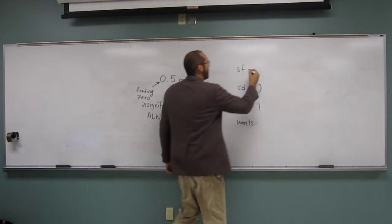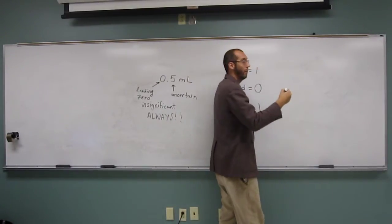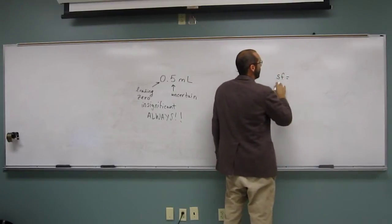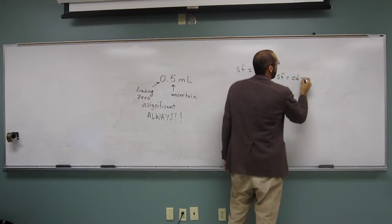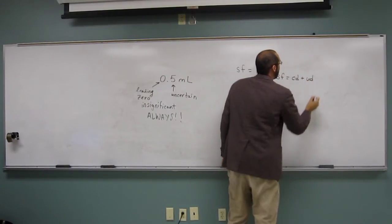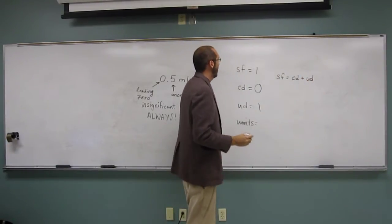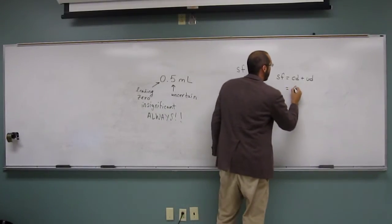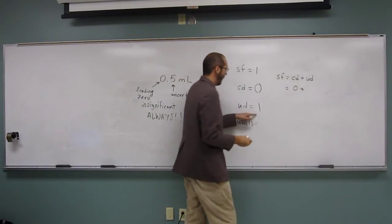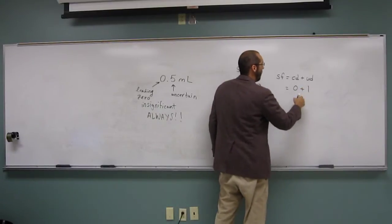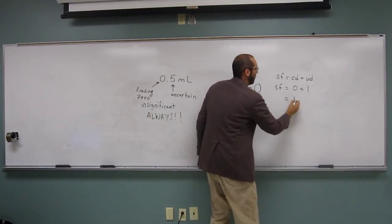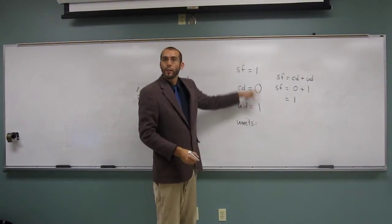One. Because remember we came up with that little equation that we said: significant figures equals your certain digits plus your uncertain digits. Let's make sure we did that correctly. So if we put in our number of certain digits, zero, and we add that to our uncertain digits, one, right? What do we get? Zero plus one equals one, right? So we did that correctly.